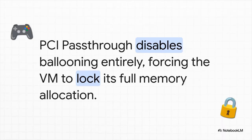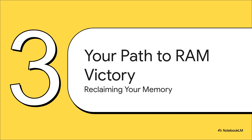For those doing PCI pass-through — passing a GPU to a VM for gaming or machine learning — there's a big catch. PCI pass-through flat out doesn't work with memory ballooning. It has to lock the VM's full memory from the very beginning, which on Proxmox 9 makes the main problem even worse.